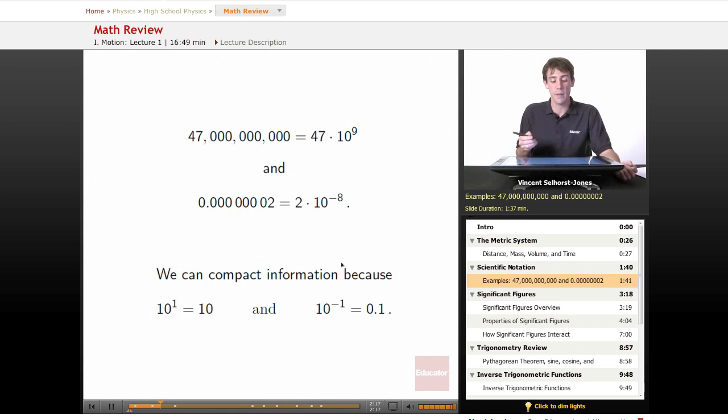The idea is you can convert it by using powers of 10. 47 billion is the same as 47 × 10⁹, because we've got 1, 2, 3, 4, 5, 6, 7, 8, 9 zeros. If we want only one digit at the front, we could push it over one more and have 4.7 × 10¹⁰.